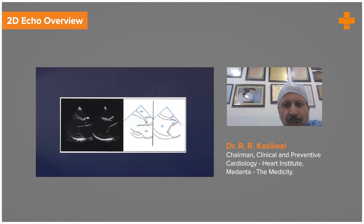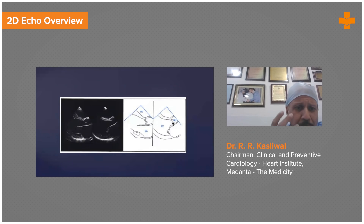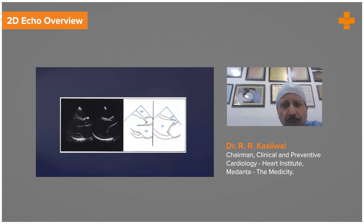Here is another picture of the parasternal long axis view. You can see the aortic valve in closed position and in open position, and you can see this on echo as well. So even though you are seeing a slice of the heart, you're able to perceive that yes, we are able to diagnose conditions by echocardiography, and this was a huge change.